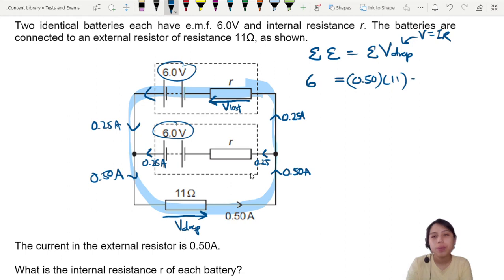So this one plus the current of 0.25, which will flow through the lost volt R. That's Kirchhoff's first law that we need to remember. From here, we'll get R equals 2 Ohms.